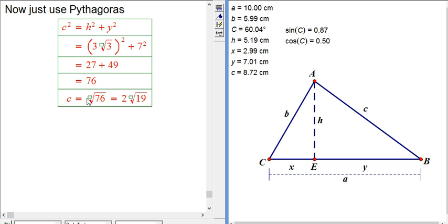Let's get the decimal for that, and just double check that I haven't done anything wrong, because the sketchpad is telling me it should be 8.72. Aha, looking good.